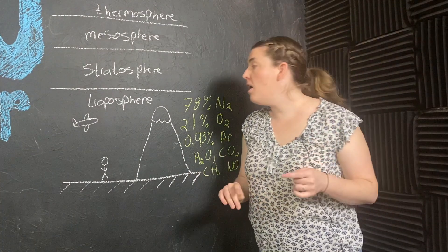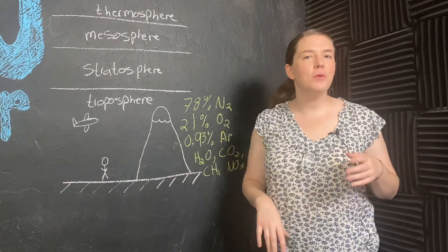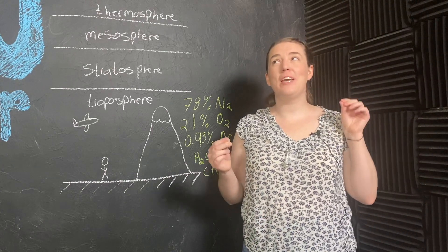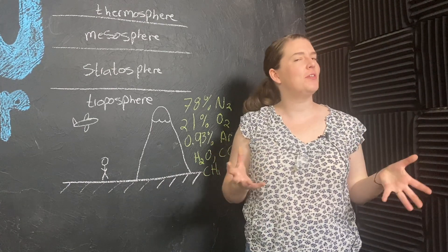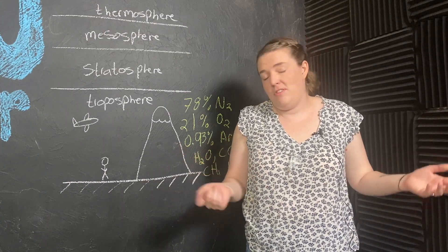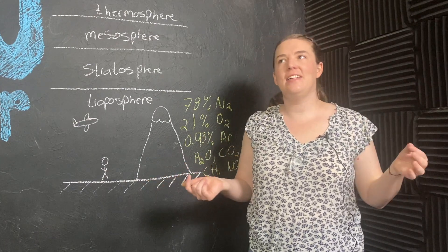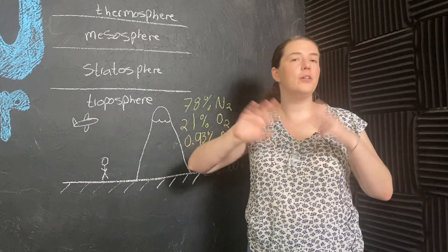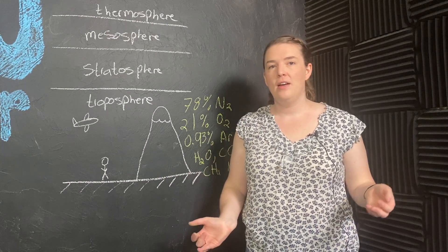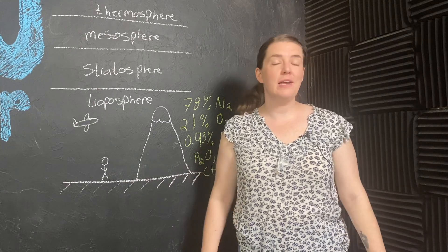But of all of those trace gases, water vapor is going to vary the most. It can be up to like 5% of the atmosphere's makeup if you're over like the equator, or a jungle, or the ocean, or something like that, and it can get just almost nothing over say a desert region. And that is in a nutshell what the atmosphere is made of.